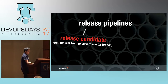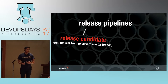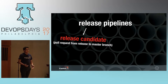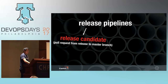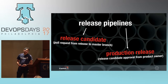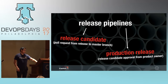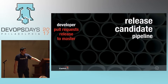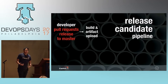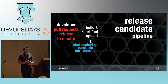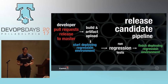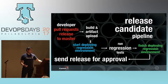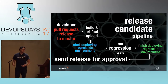For our release pipelines, a developer initiates a release candidate simply by creating a branch called release off of integration and pull requesting it to master. That kicks off the release candidate pipeline. We do the same commit phase, then a blue-green deploy to a long-running regression environment, run regression tests, and finish the deploy. After that, we kick off a release request to our release management system for approval by the product owner.